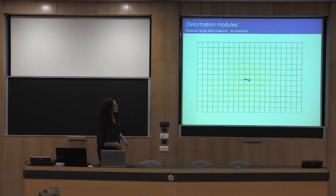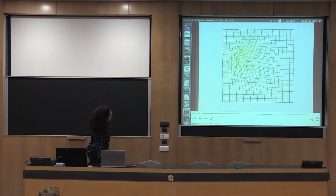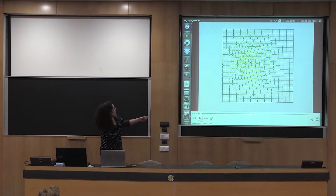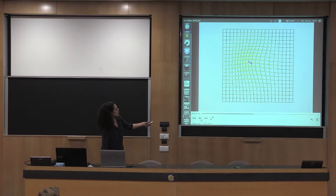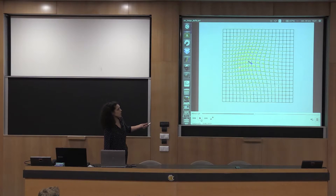Here is an example of a modular large deformation created by the deformation module for local translation. At each time, the control (in black) and the geometrical descriptor (in blue) together generate a vector field (in yellow) via the field generator. You can see that at each time the geometrical descriptor creates a vector field thanks to the control and the field generator, and it also evolves along the vector field thanks to the infinitesimal action.